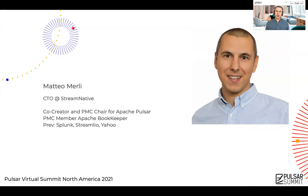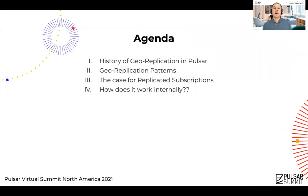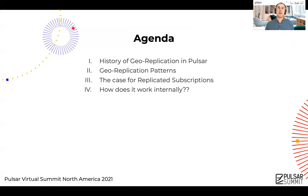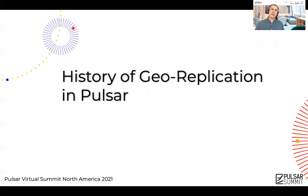To give you an idea of how this talk is structured: I will first start with the history of geo-replication in Pulsar and how we came to design it the way it is today. I will show different kinds of geo-replication patterns and how people are using geo-replication to solve their problems. From there I will show why we need replicated subscriptions. Finally, I will do a deep dive on how it works internally. It's a complex component, but I think it will be very interesting.